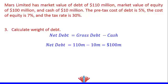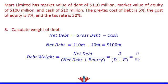Weight of debt, which represents the share or percentage of debt, is the market value of net debt divided by both the market value of net debt and market value of equity — that is, market value of net debt divided by enterprise value. Therefore, we can write it as: weight of debt = d divided by (d plus e).